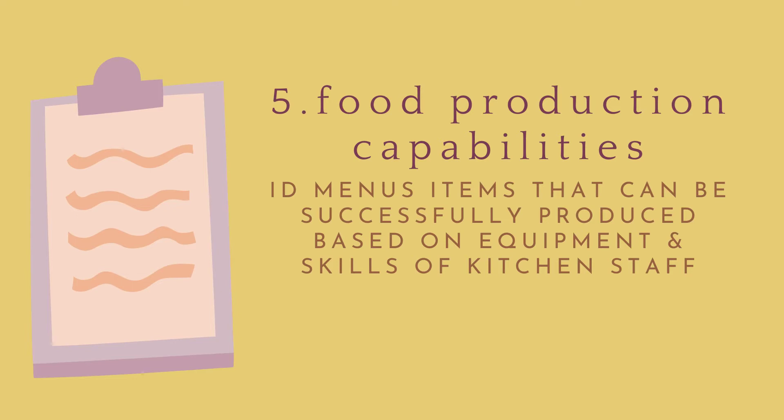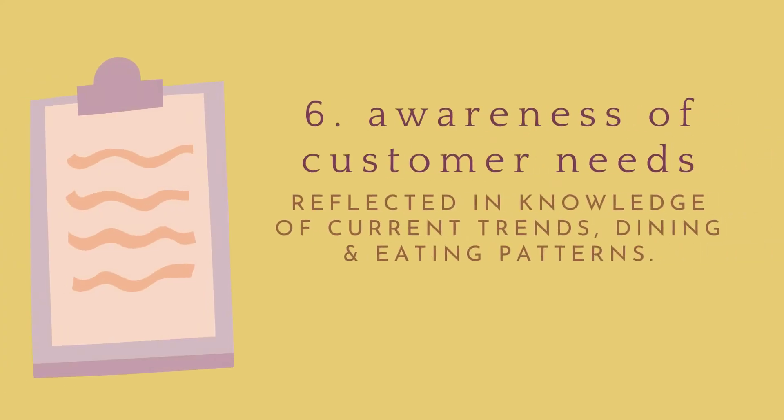The fifth factor is food production capabilities — identifying menu items within the cuisine that can be successfully produced for catering services, based on available equipment and skills of kitchen staff. This requires skilled staff to produce quality menu items in volume. The sixth factor is awareness of customer needs, reflected in knowledge of current dining and eating trends and the ability to accommodate dietary needs.